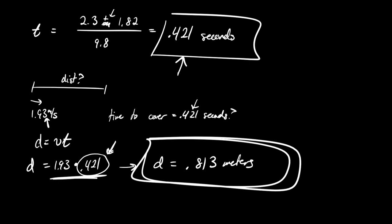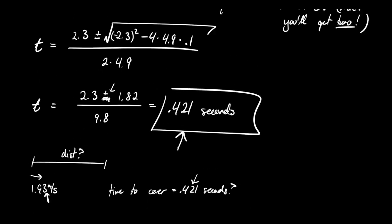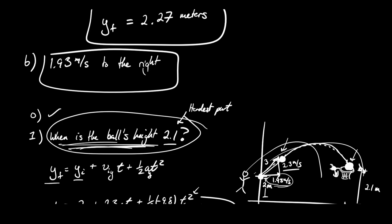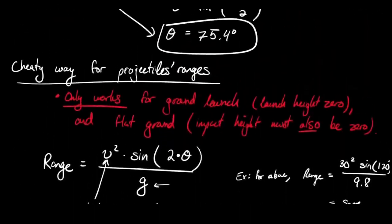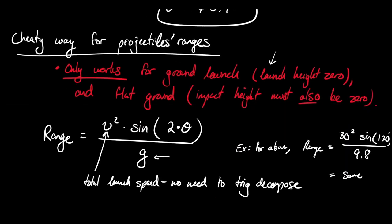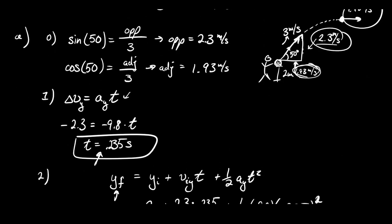Excellent work today — that's 2D kinematics mostly done. There are many other possible problem types; the difficult art is converting seemingly weird questions into 'find the time we're asked about.' One final comment: be careful using the range formula — it's dangerous because it only works on flat ground. Stick to the step 0-1-2 process in general. Best of luck, and I'll see you in the next video where we'll start forces — the most difficult yet most rewarding thing in physics once you get it.